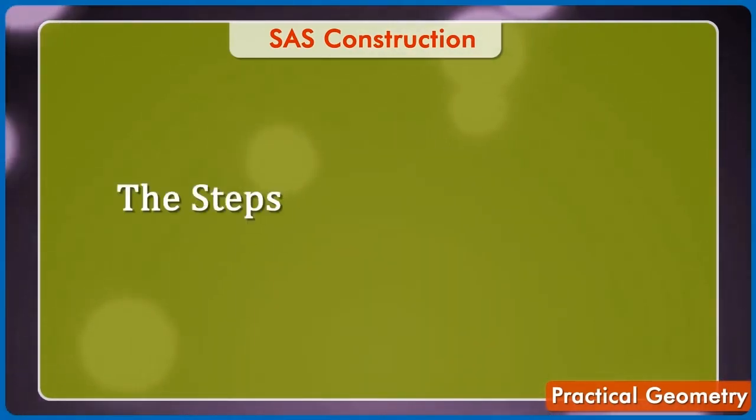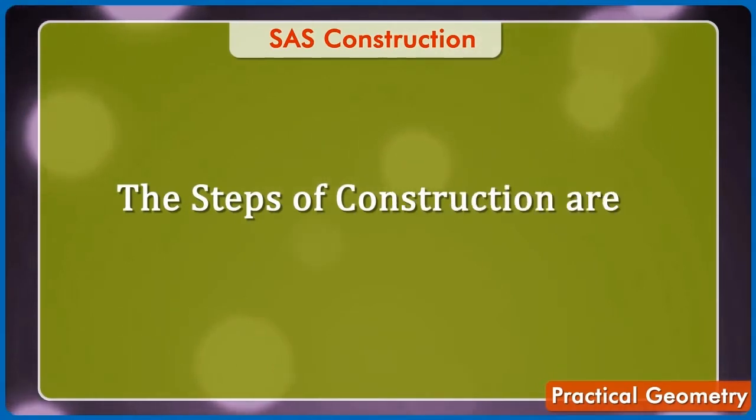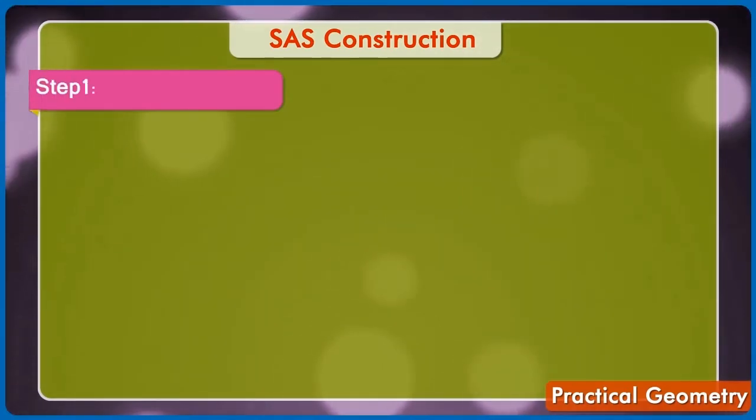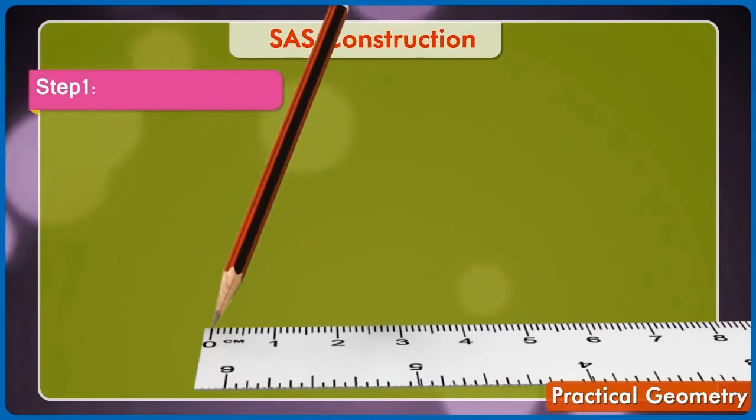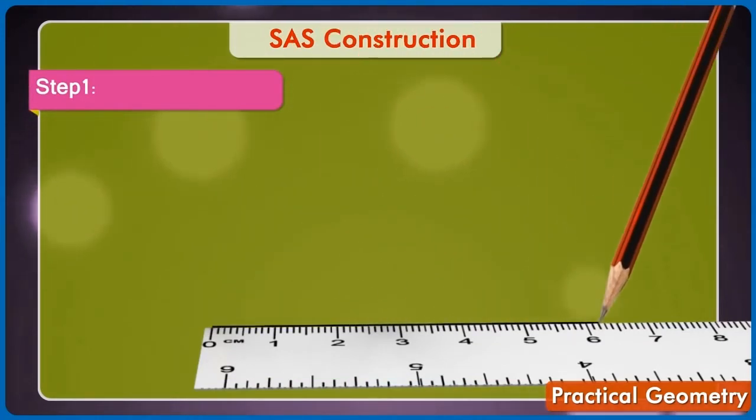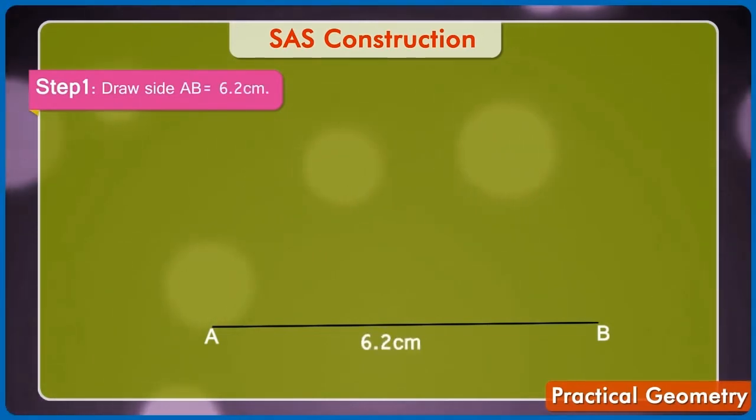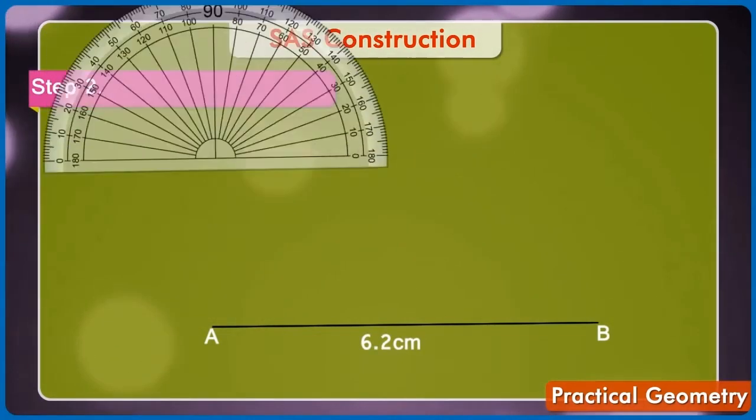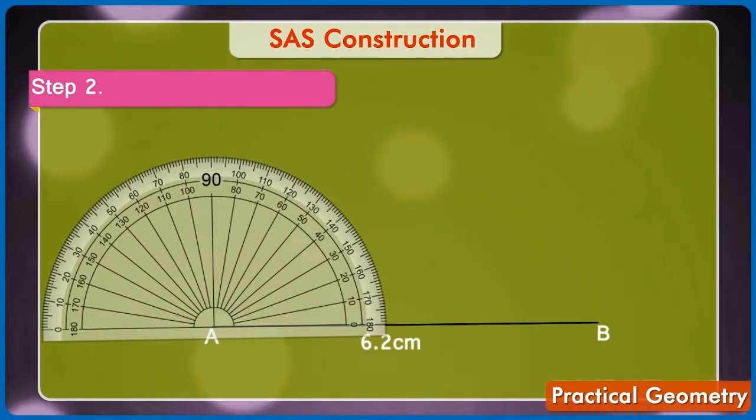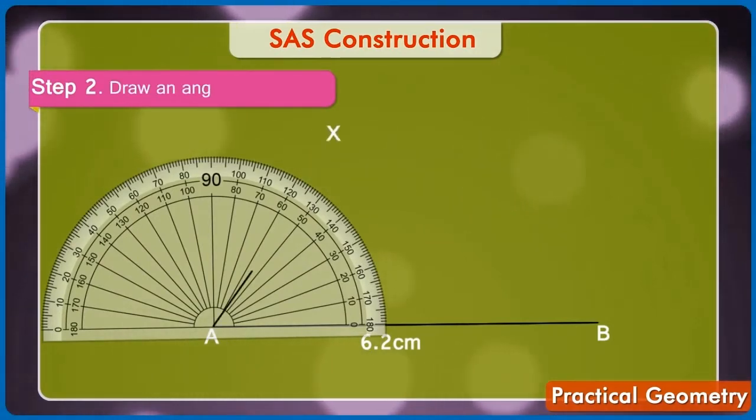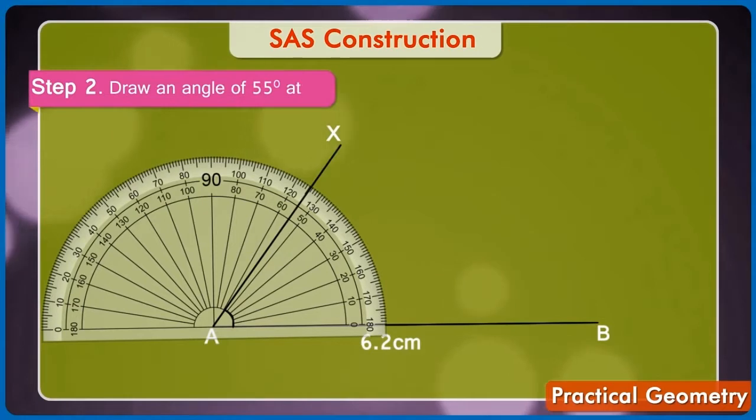Solution. The steps of construction of this triangle are: Step 1: Draw any one side. Let's draw side AB is equal to 6.2 cm. Step 2: Using protractor, draw an angle 55 degrees at A.